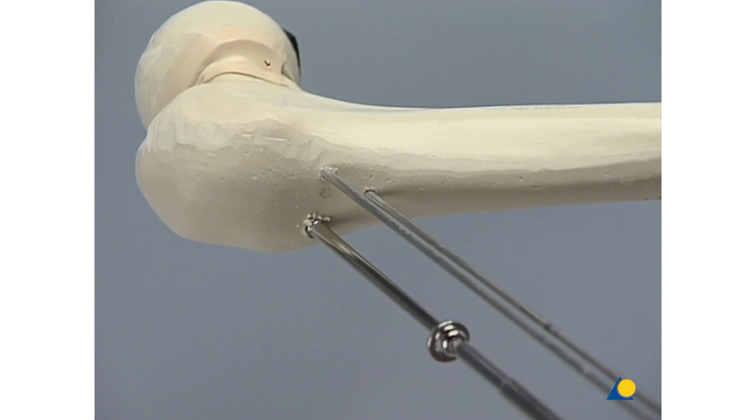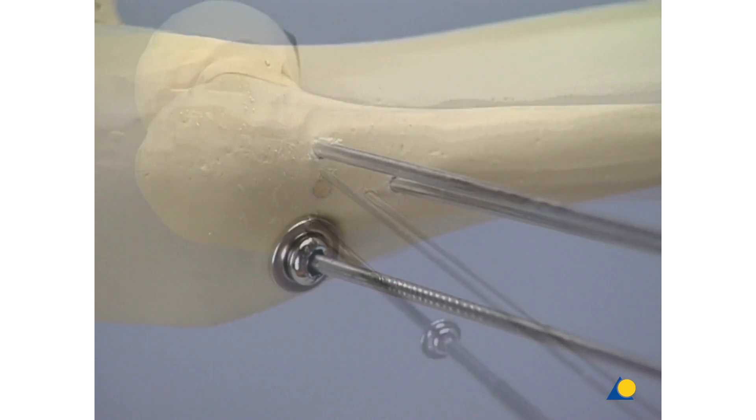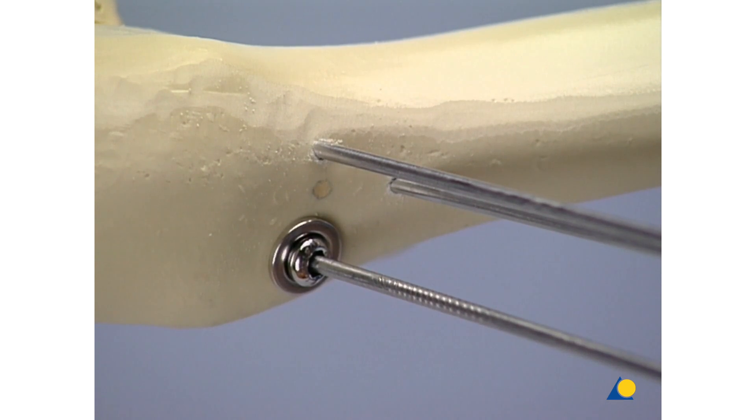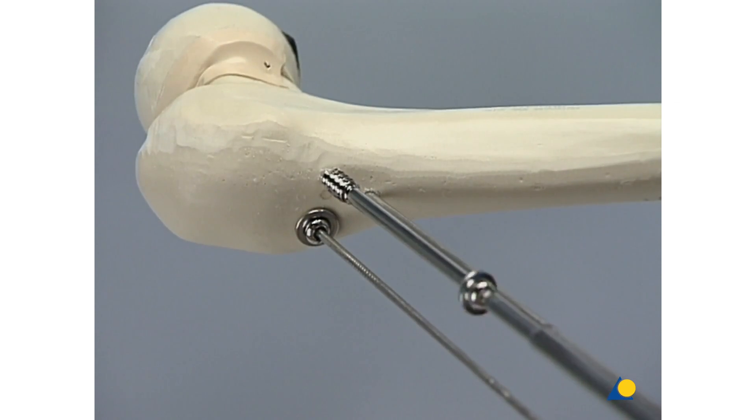The use of washers may prevent the screw head from sinking in. The two remaining screws are inserted accordingly and the guide wires are carefully removed.